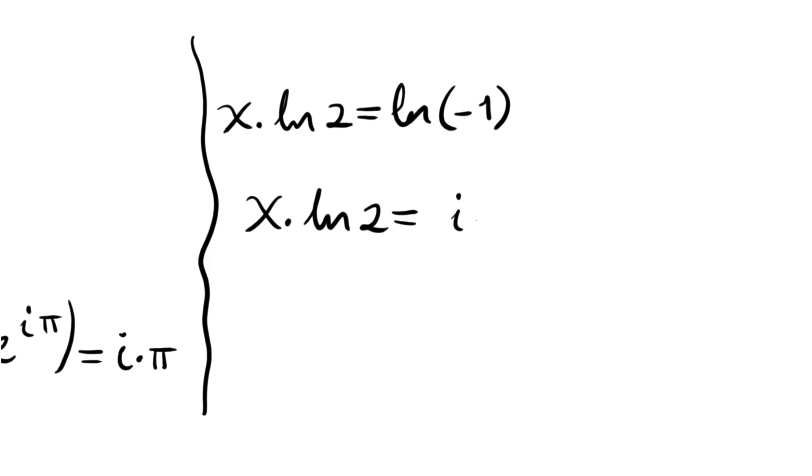Dividing both sides by ln 2, we will have iπ over ln 2, and this is the final result.